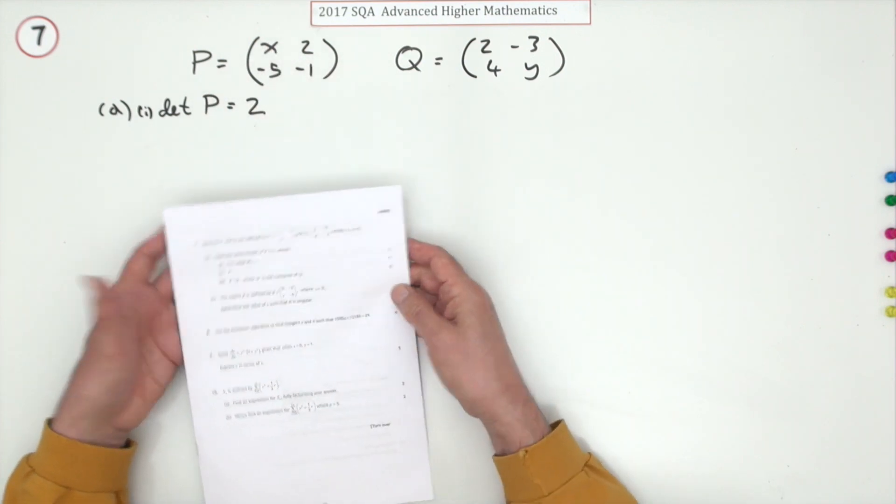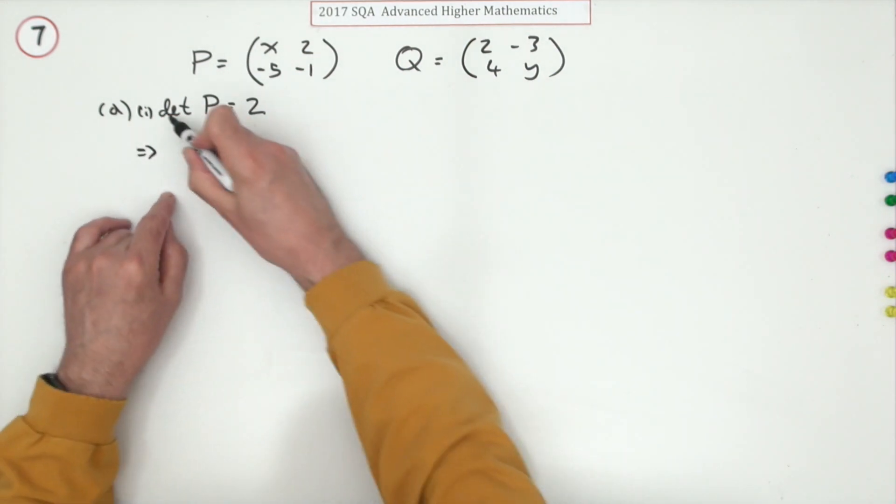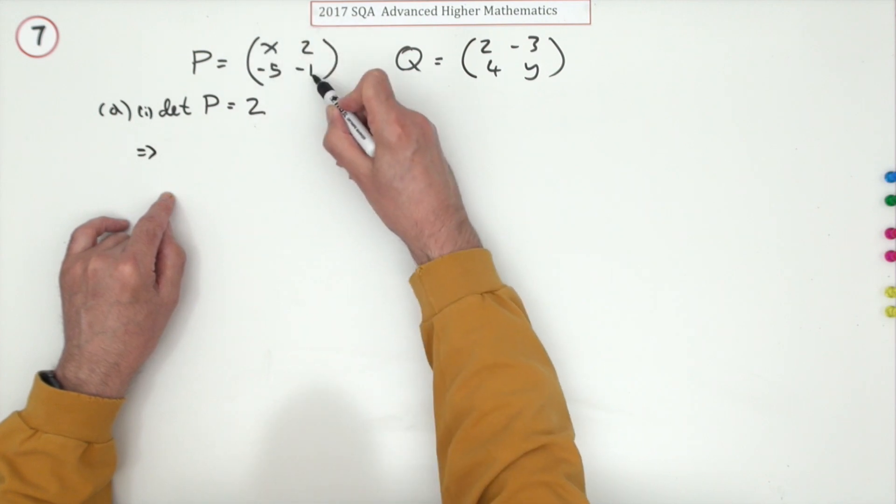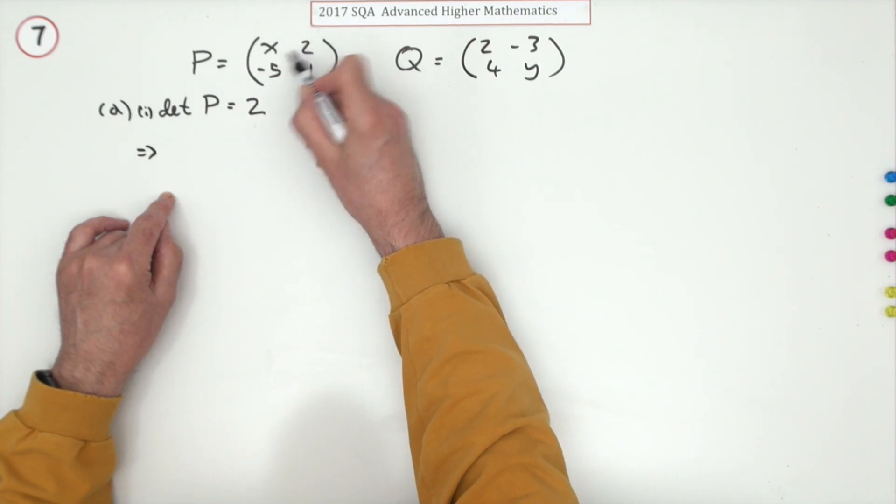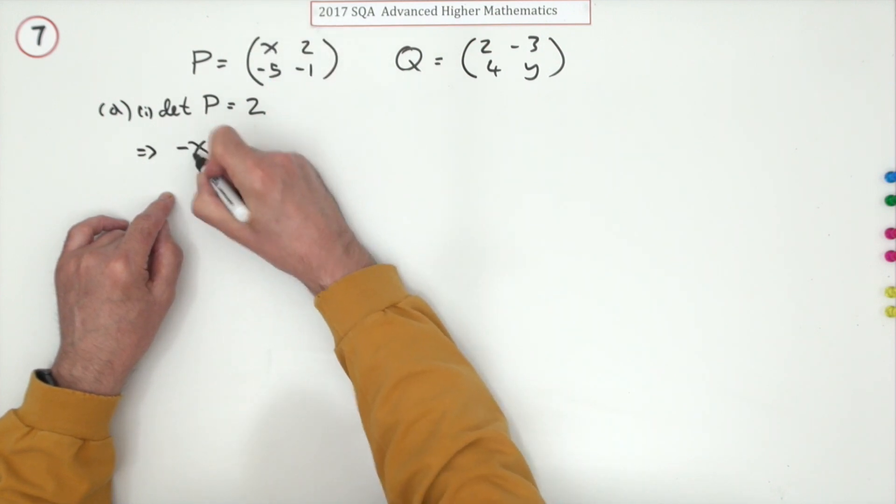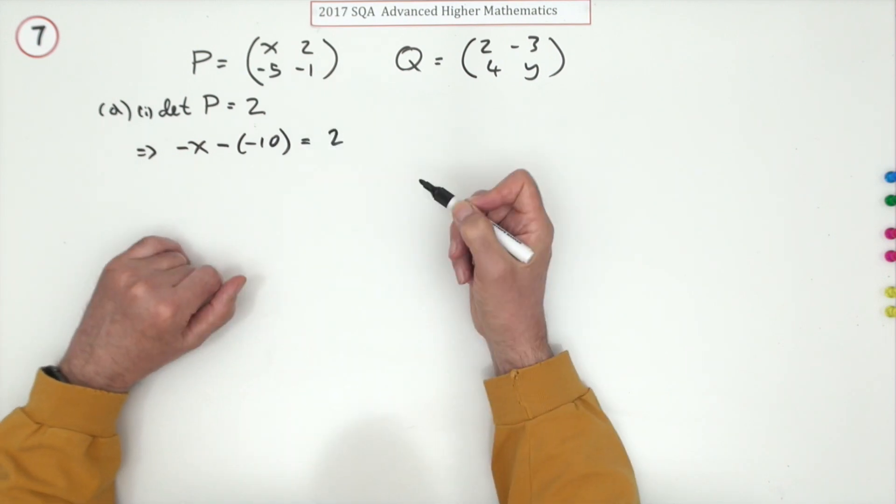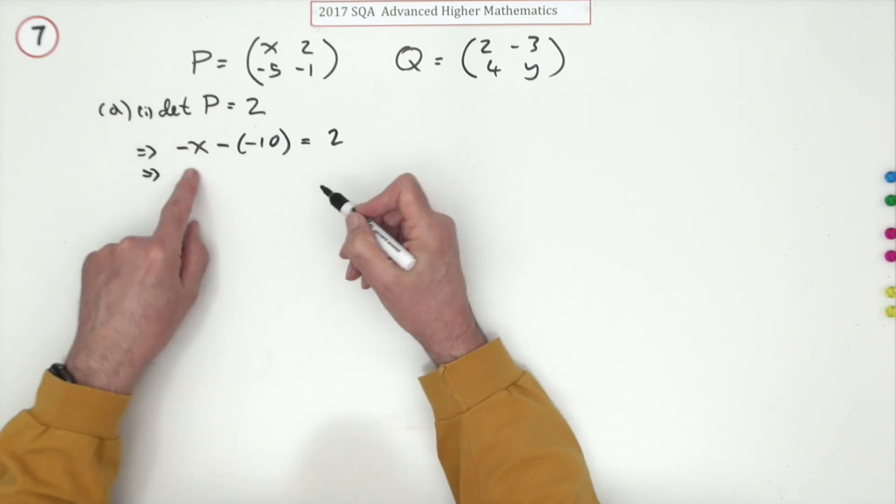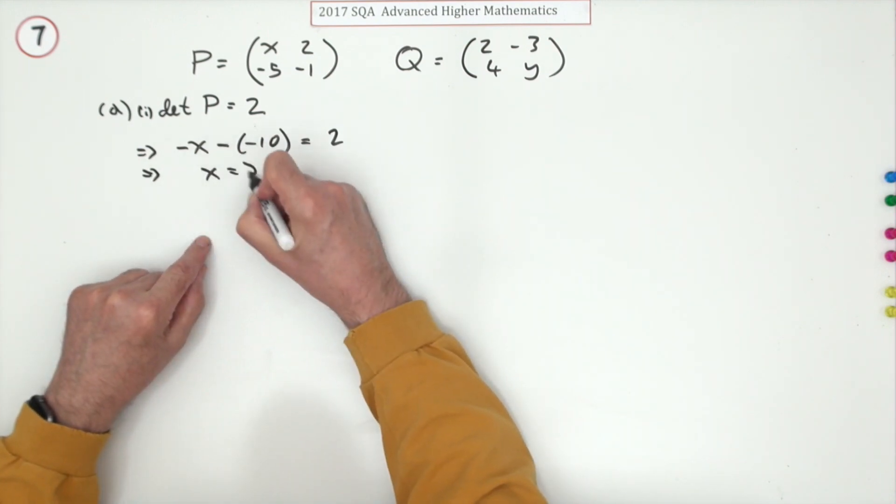If the determinant is two, what's x? Well, if the determinant equals two, the determinant is given by the product of the main diagonal elements minus the product of the other diagonal elements. So that means negative x take away negative 10 equals two. Take it across: x equals 10 minus 2, x equals 8. There's the first mark.